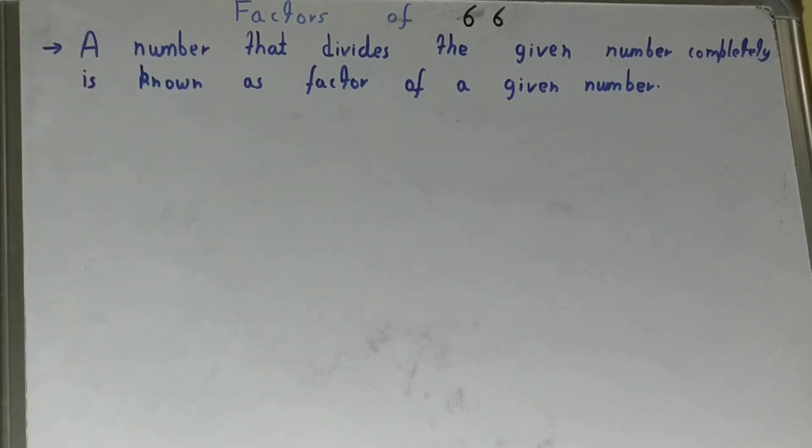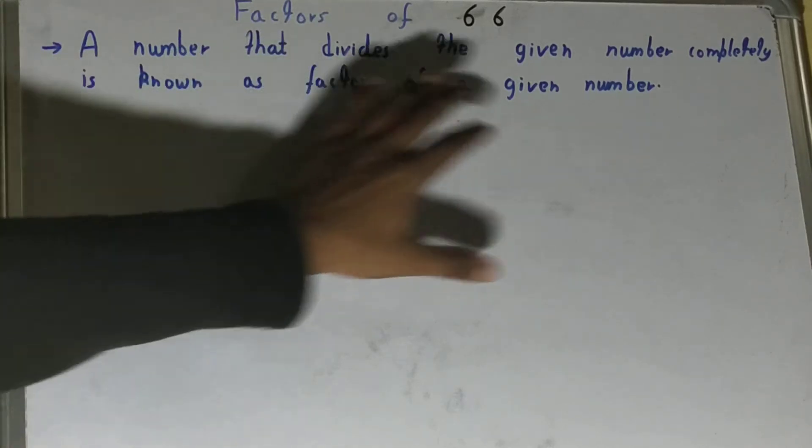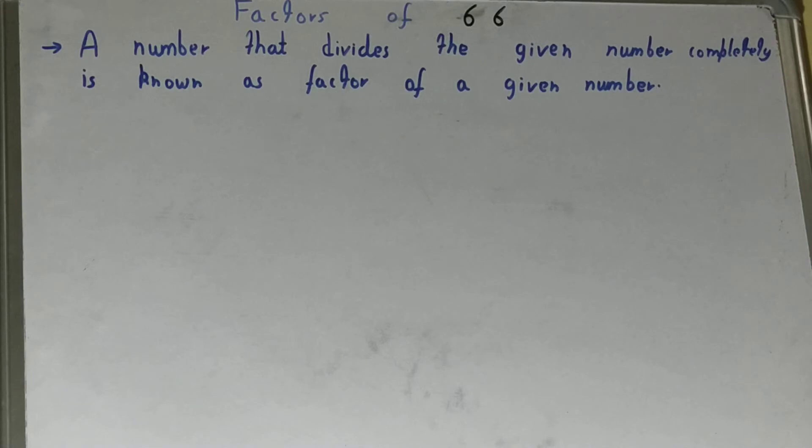A factor is a number that divides the given number completely. Completely basically means getting the remainder zero. If you get the remainder zero, you can call that number a factor of the given number.